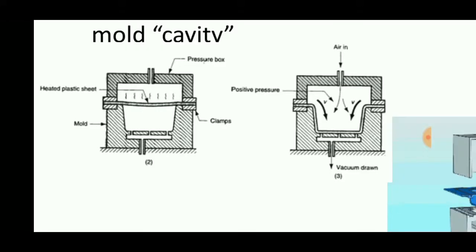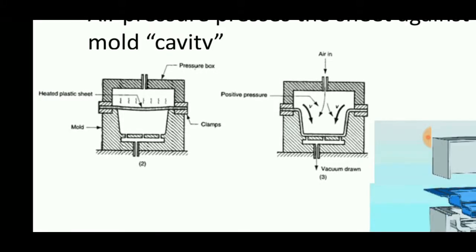The sheet deforms and takes the shape of the mold cavity. Vacuum is also used to draw the lower part of the sheet so that it completely conforms to the shape of the mold cavity.